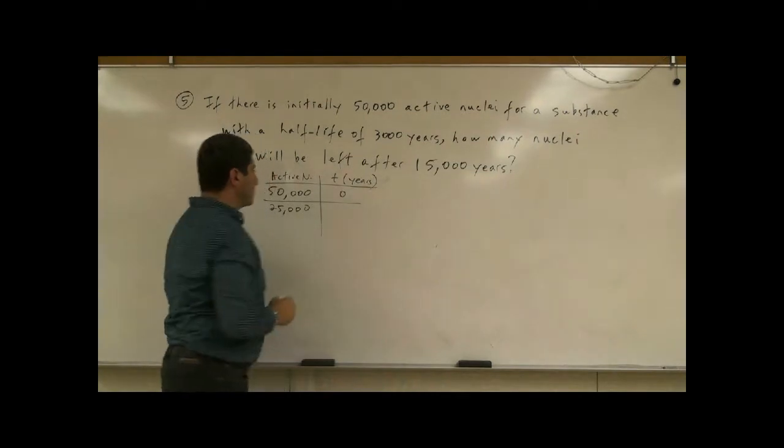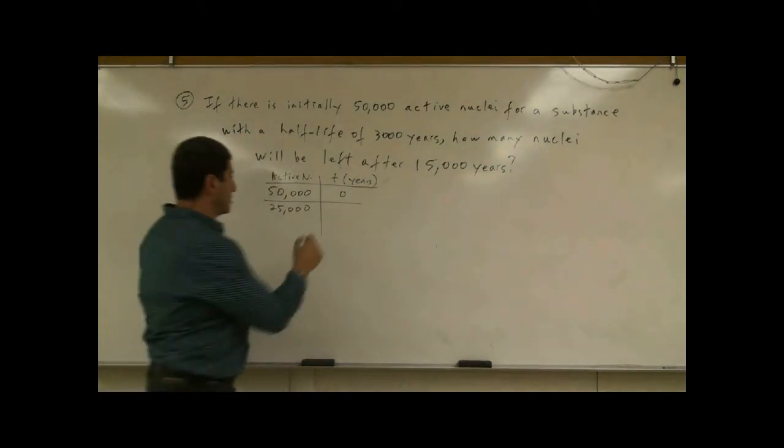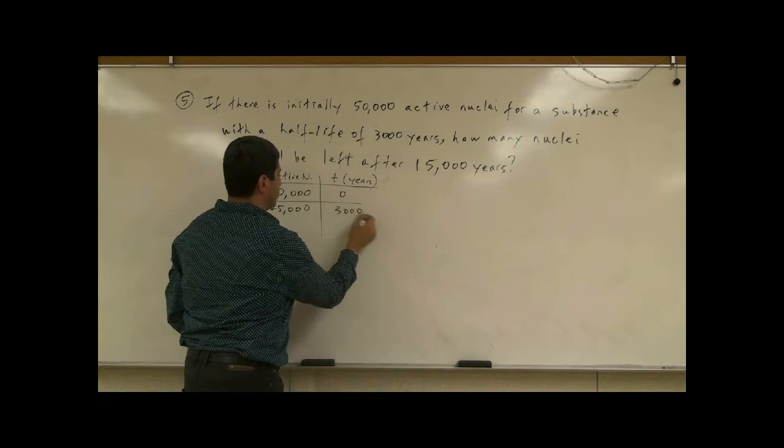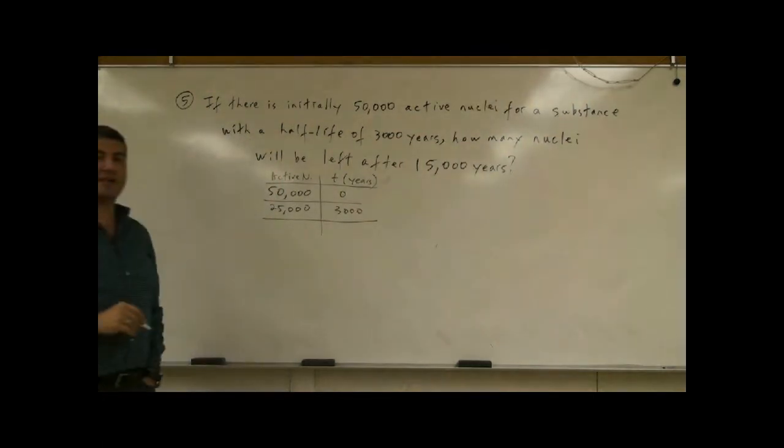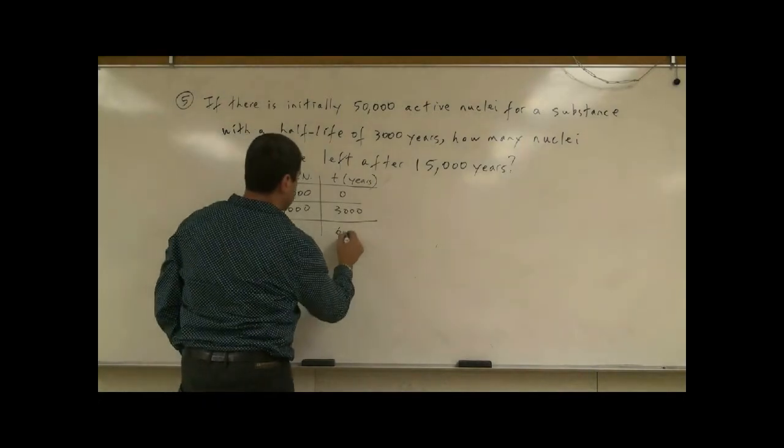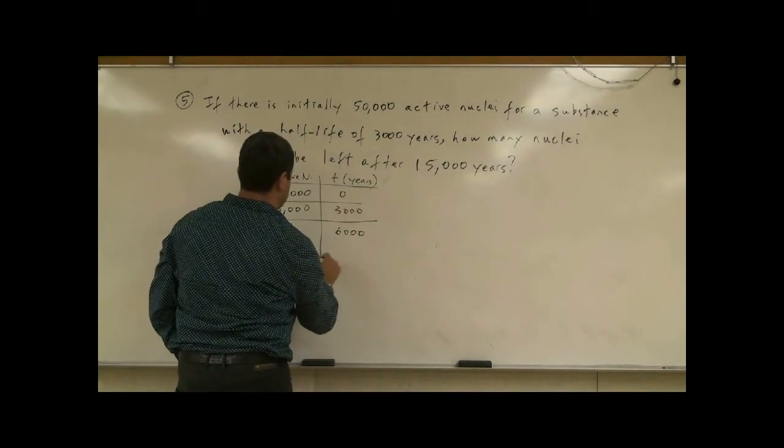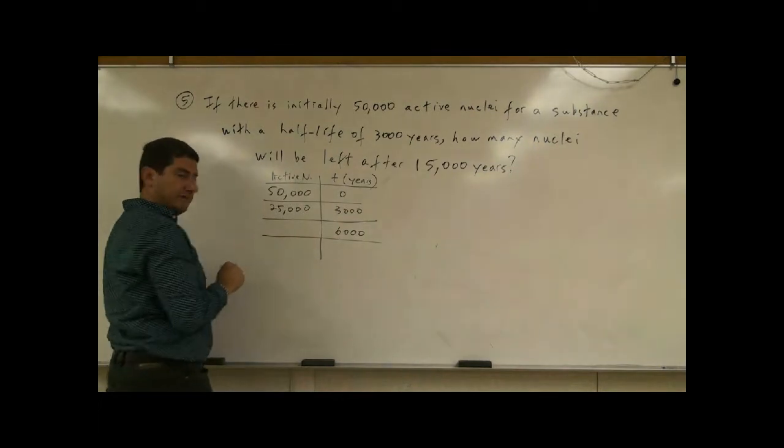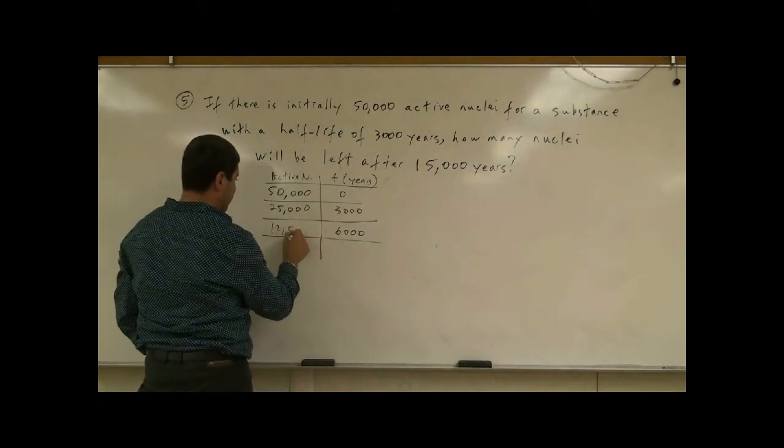When it first began, zero years, there's 50,000. After 3,000 years, there's 25,000 active nuclei. After another 3,000 years, that's 6,000 years total. How many active nuclei? Well, half of 25,000 is 12,500.